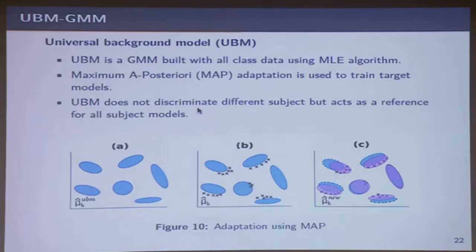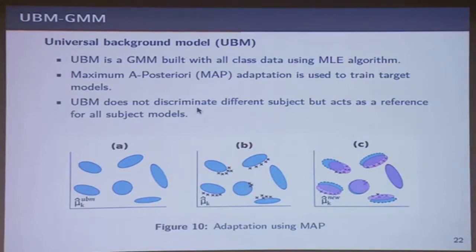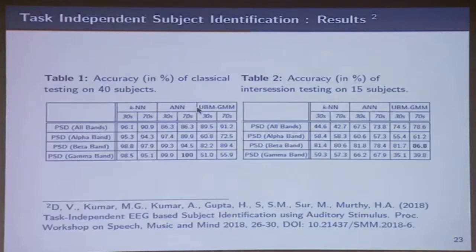Once this model was built, we take subject-specific data and use what's called maximum a-posteriori probability-based adaptation. The subject's feature vectors come near these clusters, the clusters move a little bit, and that gives you the characteristics of the specific subject. There is one universal reference, and with respect to that reference, you build models for each one of the subjects.